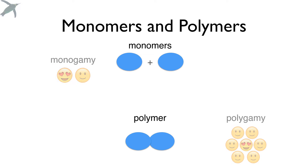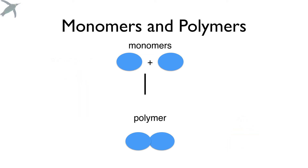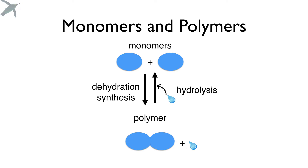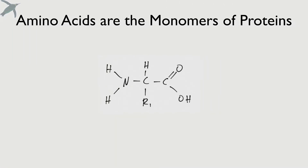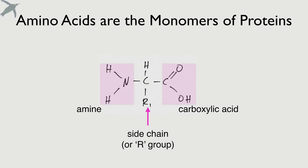If you've got two monomers and you want to join them together, we run a reaction called dehydration synthesis. On the other hand, you can break a bond between two monomers in a reaction called hydrolysis. Now, in proteins, the monomers are amino acids — so named because they have an amine end and a carboxylic acid end. We've also got a side chain; that's the part that's going to vary.